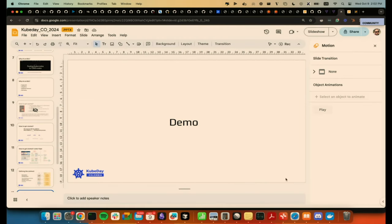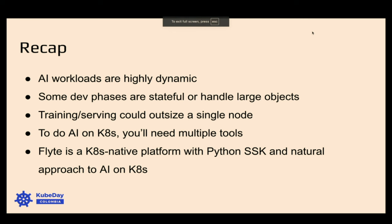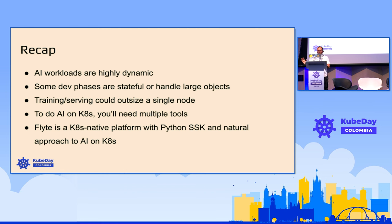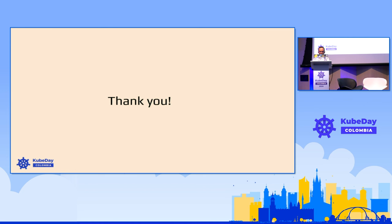In summary, to recap: there's a big problem. AI workloads are super dynamic — the moment you detect your model is hallucinating, you need to go back to the training phase. Some of these phases handle large objects, which makes it more complicated. Development could outsize a single node many times. In summary, you will need to build a platform.